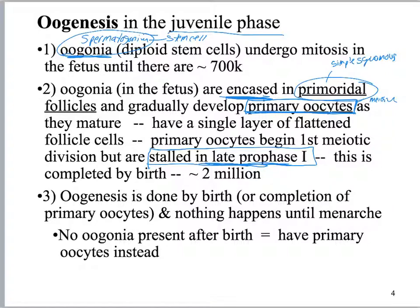By the time you're done with all of this, at the time of birth you're going to have around two million of these primary oocytes encased in primordial follicles. Everything stops — all of this is done by birth.